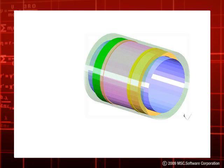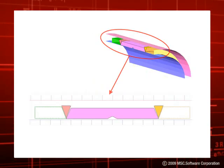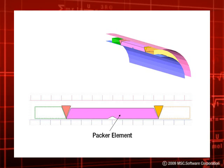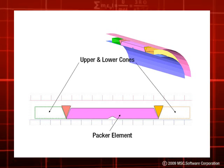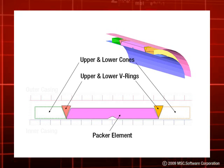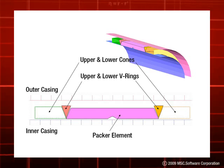Here we have a simplified packer design with some key components: the packing element, the upper and lower cones, upper and lower V-rings, and the inner and outer casing wall.